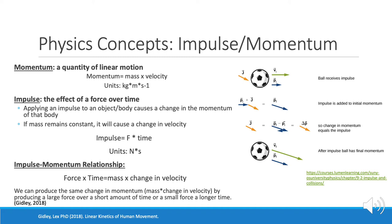In this image, you can see the relationship between the two. The soccer ball receives an impulse, and the impulse is added to the initial momentum of the ball. The change in momentum is equal to the impulse acted on the ball, and after the impulse, the ball has a final momentum. The same change in momentum can be produced by a large force over a short amount of time or a small force over a longer amount of time.